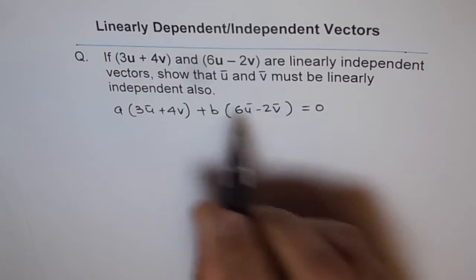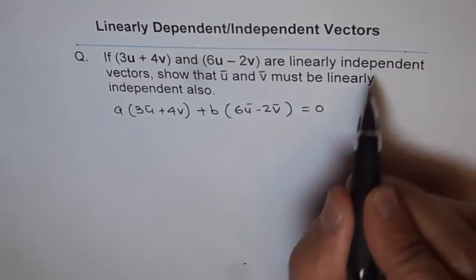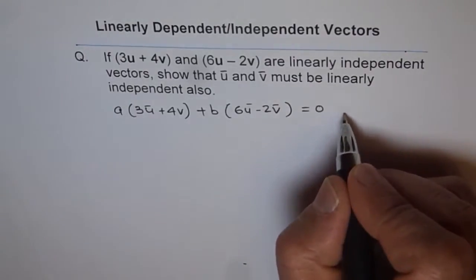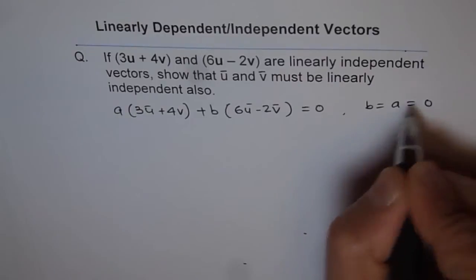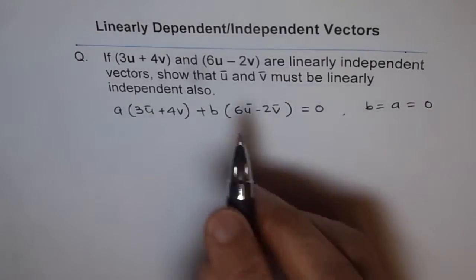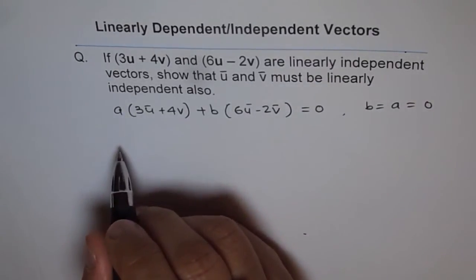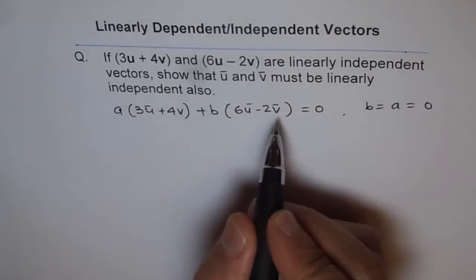Now since they are linearly independent vectors, then a and b both should be 0. That means a = 0 and b = 0, since they are linearly independent. Otherwise they are dependent.